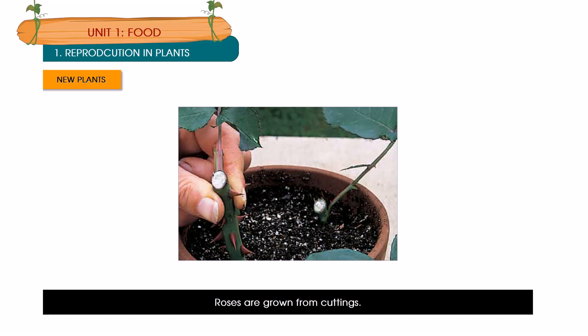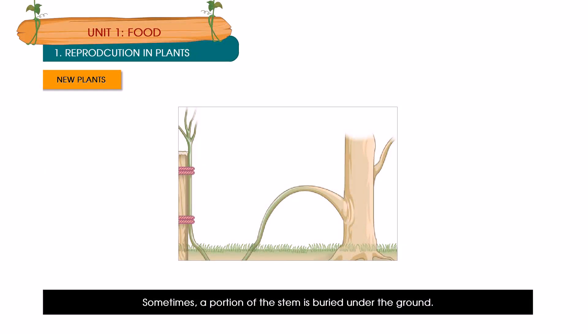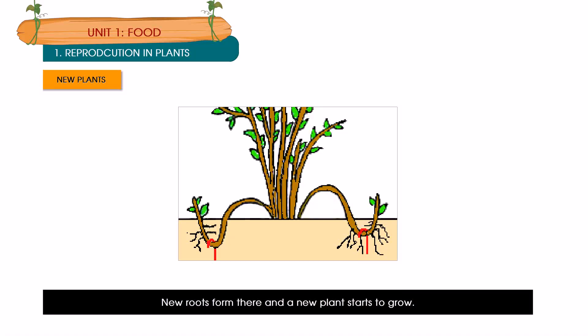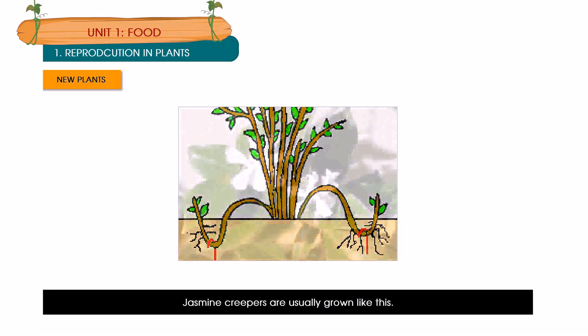Roses are grown from cuttings. Sometimes a portion of the stem is buried under the ground — new roots form there and a new plant starts to grow. Jasmine creepers are usually grown like this. Potatoes, sweet potatoes and ginger grow from underground parts of the plant. Bryophyllum reproduces from its leaves. Underground stem growing into a new plant. A stem cutting growing into a new plant. A root growing into a new plant. New plants growing from a leaf.